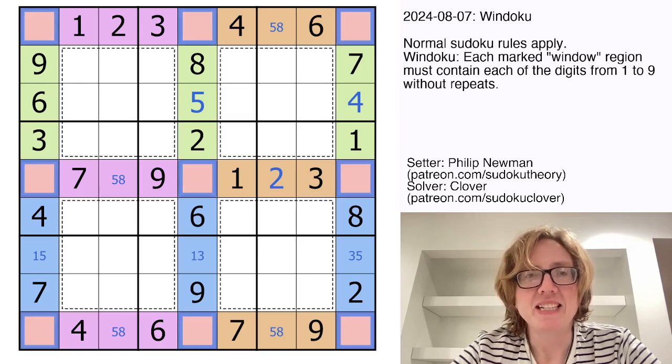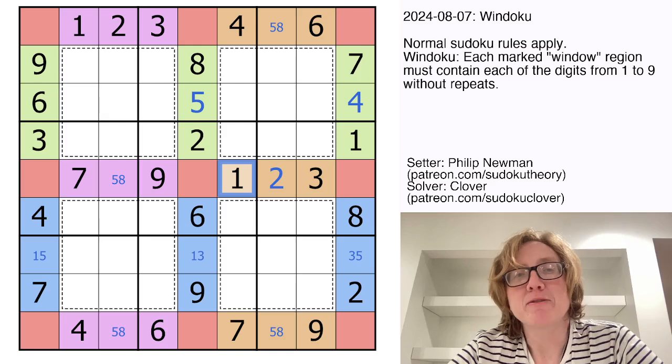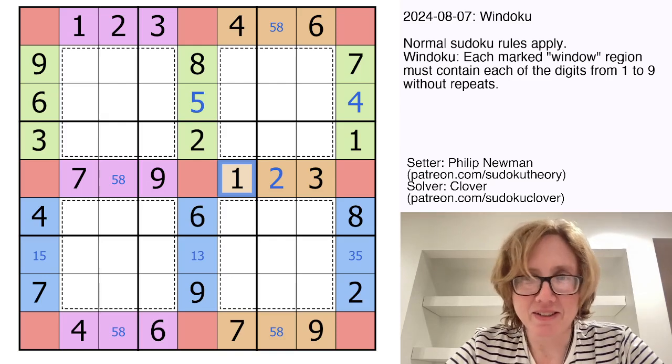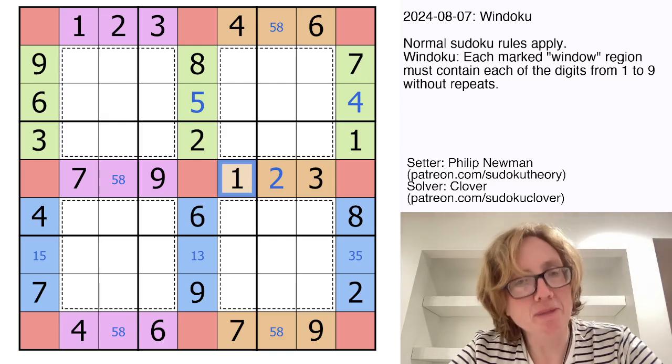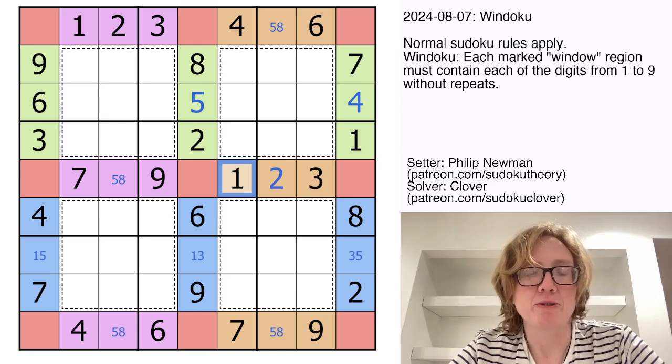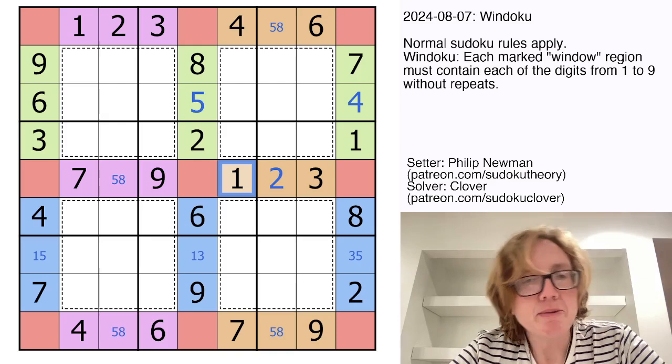So if we were to highlight these cells, that red group is also a set of the digits one through nine. We don't have any digits in those cells given. So that's probably not going to be our starting place, but that can be really useful in Windoku puzzles.